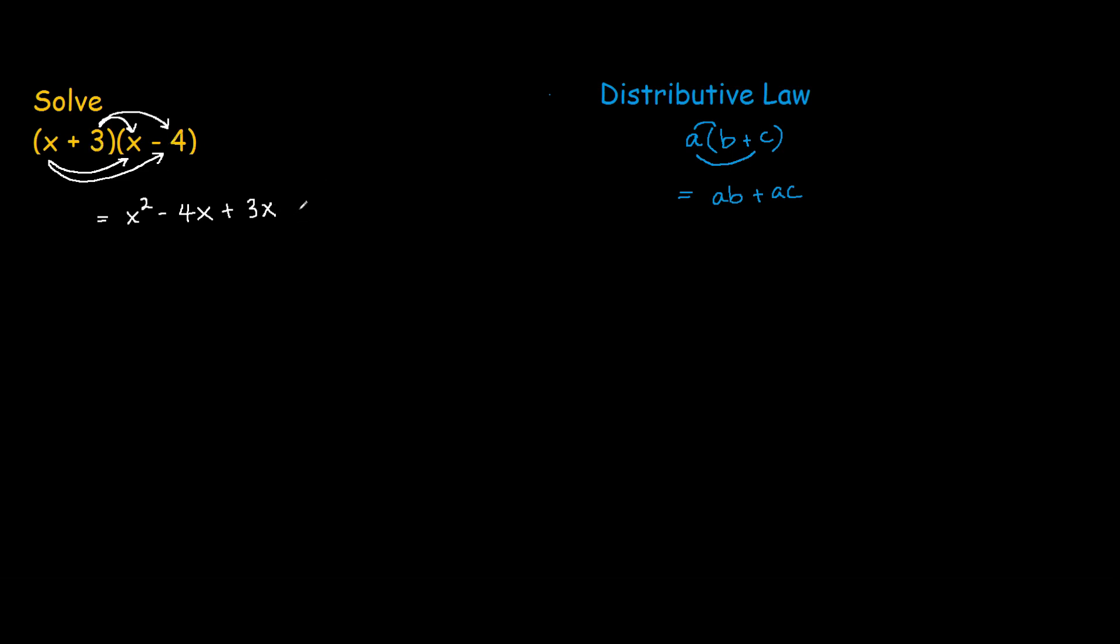So we're effectively taking the brackets away by using this law but in two different steps. You treat each term on the left hand side bracket by itself before multiplying through. In this expression here we can see that it can be simplified even further because we have two like terms, the negative 4x and the plus 3x.